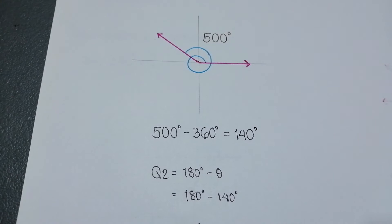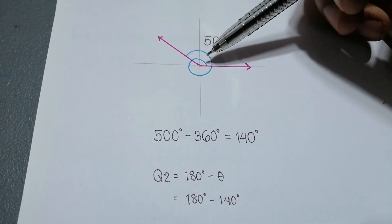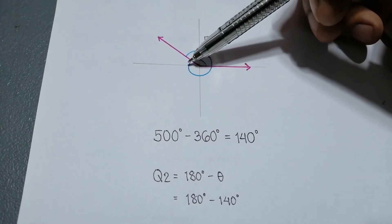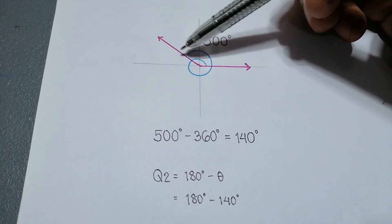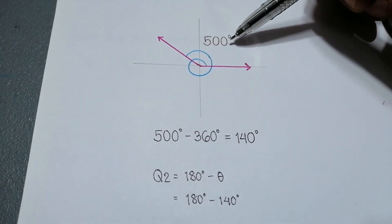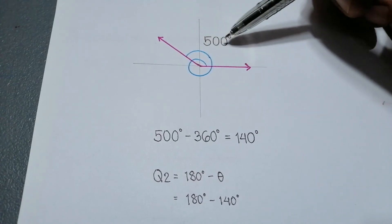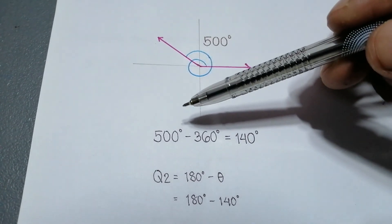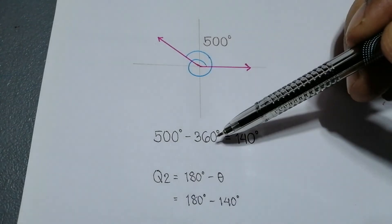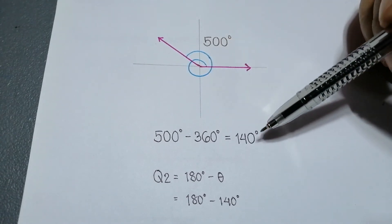Let us now determine the reference angle if the given angle is greater than 360 degrees. Let's say our terminal side creates an angle equal to 500 degrees. As it completes a full circle, it adds another 140 degrees and our terminal side is now at the second quadrant, creating a total of 500 degrees. To get the reference angle, first let us get the coterminal angle of our given angle which is less than 360 degrees — by subtracting 500 degrees by 360 degrees, we get the coterminal angle of 140 degrees.